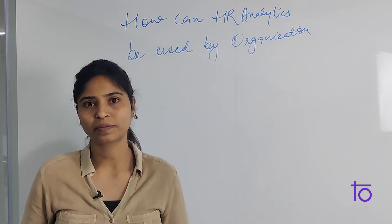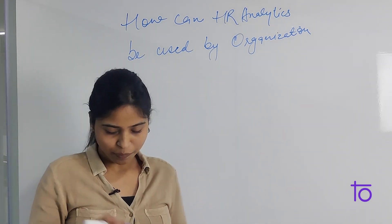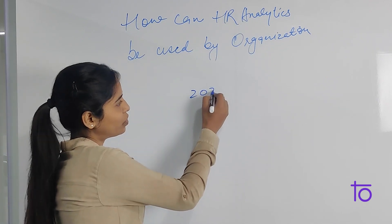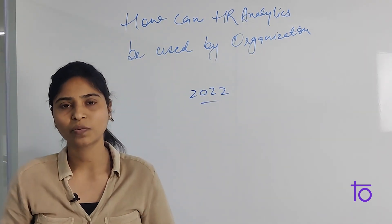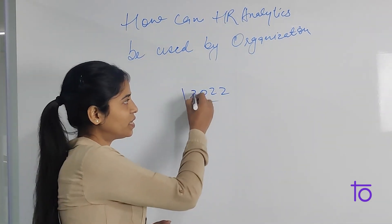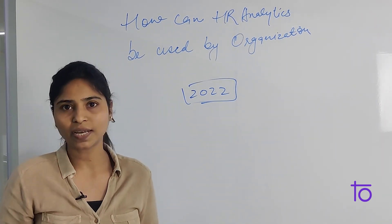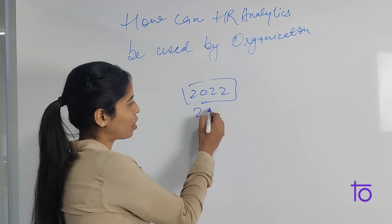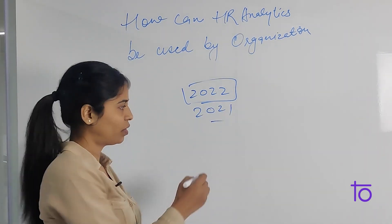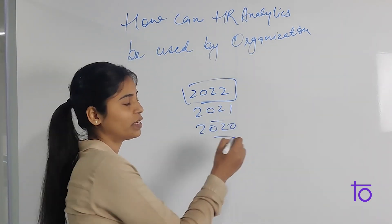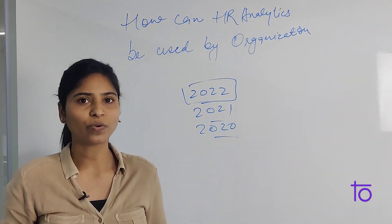We need to monitor and measure against other data. For example, we have 2022 data. We'll monitor this data and measure it against other data like 2021 data and 2020 data.